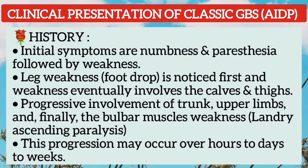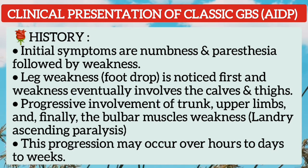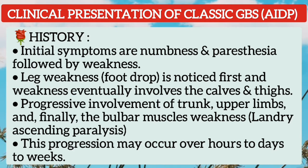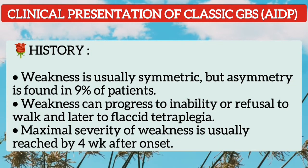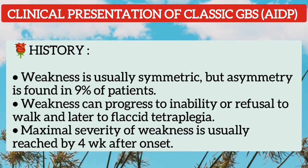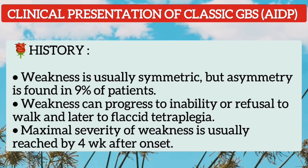Initial symptoms are numbness and paresthesia, followed by weakness. Leg weakness — that is, foot drop — is first noticed, and the weakness eventually involves the calf and thighs. There is progressive involvement of the trunk, upper limbs, and finally bulbar muscle weakness, known as Landry ascending paralysis. This progression may occur over hours, days, or weeks. Weakness is usually symmetric, though asymmetry is noted in 9% of patients. This weakness progresses to inability to walk and later to flaccid tetraplegia.